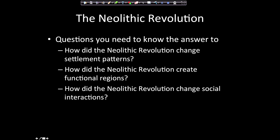To review: How did the Neolithic Revolution change settlement patterns? People lived in permanent locations near rivers. How did it create functional regions? Those rivers provided transportation networks, so communities worked together as functional regions. How did it change social interactions? People lived in close proximity, so a social hierarchy started to develop, and inequality between men and women also increased.